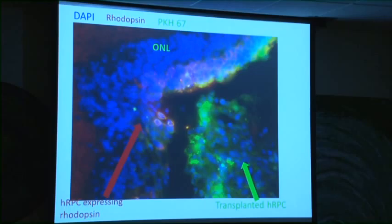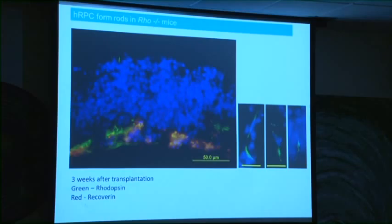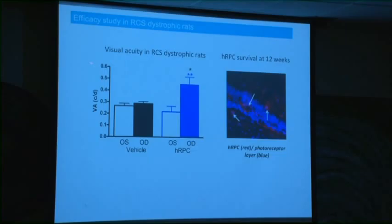Here we see rhodopsin staining in a rhodopsin knockout animal, which has no rhodopsin — that's why the outer nuclear layer is not stained positive. The orange donor cells are making rhodopsin and integrating in the outer nuclear layer. It's a real challenge to do human studies in mice — the cells don't survive very long. Future work will use immunodeficient mouse strains with a retinal degenerative background made by a former student, Bud Tucker. This just shows another image of transplanted cells expressing rod markers after transplantation.